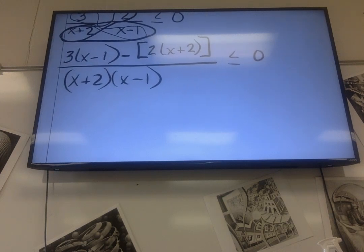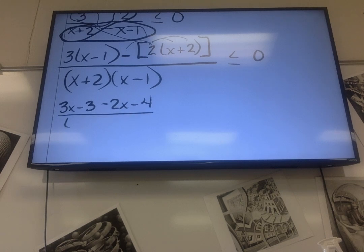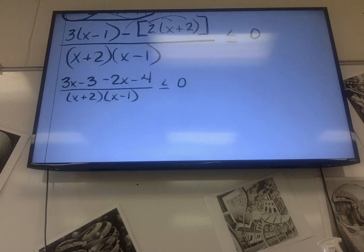Okay, so on top that would be 3x minus 3 minus 2x minus 4, and distribute. Now I'm not going to multiply the bottom because the whole thing is we're going to factor it anyways. So 3x minus 2x is x, negative 3 minus 4 is minus 7.